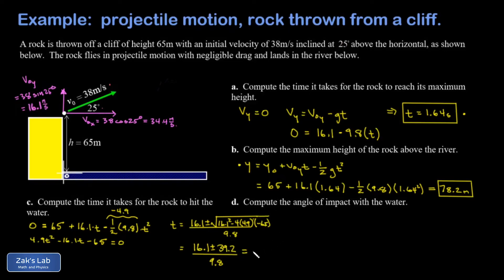Finally I'm asked to compute the angle of impact with the water. So at some point the rock hits the water down here and it's still moving to the right and it's also moving down at the same time. Key to answering this question is to write down both of those velocity components, and then we'll be able to find an angle with respect to the horizontal.